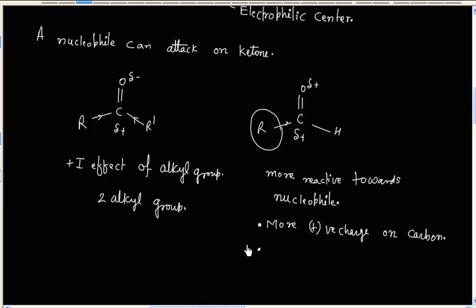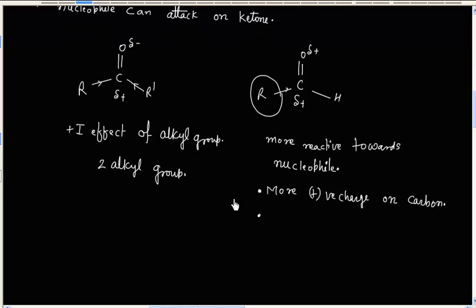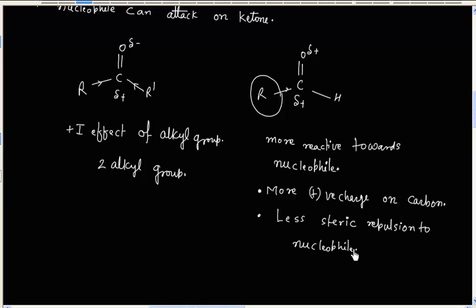Another reason is that in a ketone we have two alkyl groups that can show a steric effect. The incoming nucleophile will be repelled by both alkyl groups. But in case of aldehyde, we have only one alkyl group, so the nucleophile has less chance to be repelled — there is less steric repulsion. So there are two reasons: one is the steric factor and another is the electronic factor.